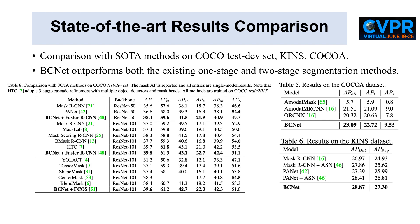BCNET achieves state-of-the-art performance on three large-scale benchmarks: COCO, KINs, and COCOA on the challenging COCO leaderboard. BCNET demonstrates its effectiveness by outperforming both PANET and Mask-Scoring RCNN by 1.5 AP using Faster RCNN, and exceeding CenterMask by 1.3 AP using FCOS.